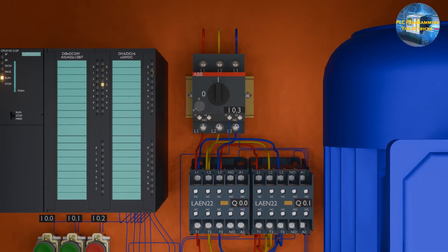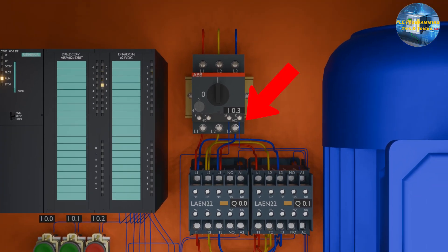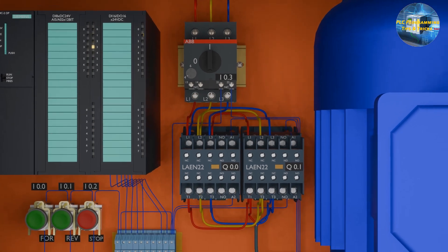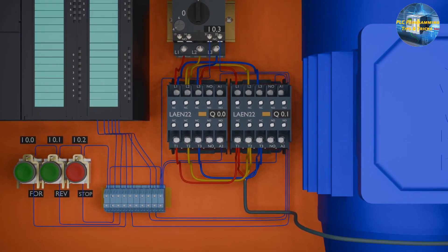Next, we have an overload contact of the breaker wired at I0.3 input of the PLC. We also have two contactors.